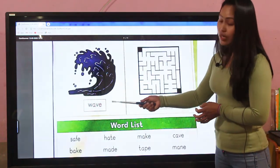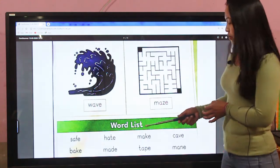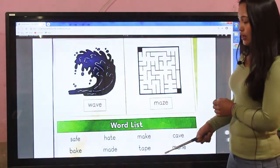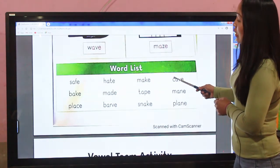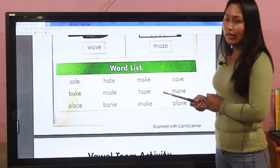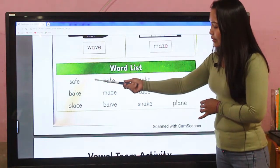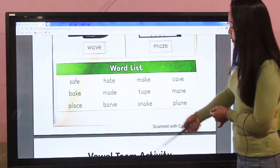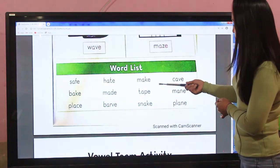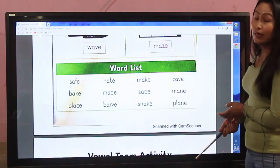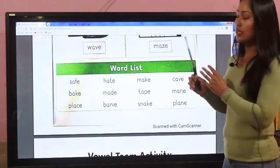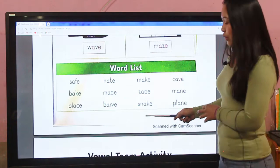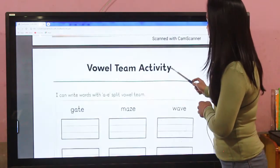W-a-v-e wave, m-a-d-e made. We can see some more word list of a-e, just like safe, back, place, hat, mad, barb, mac, tap, snack, cap, man, plan. These are the words related to a-e vowel.